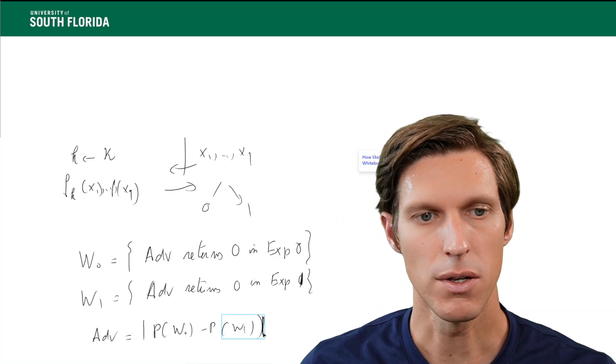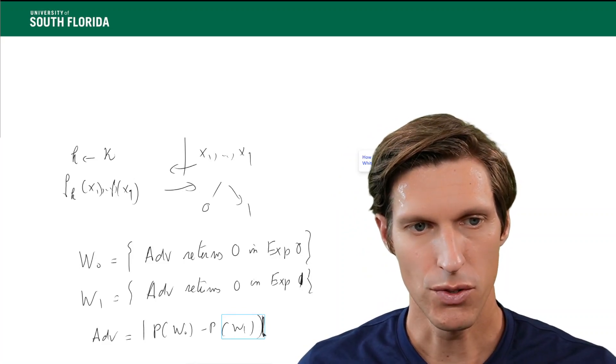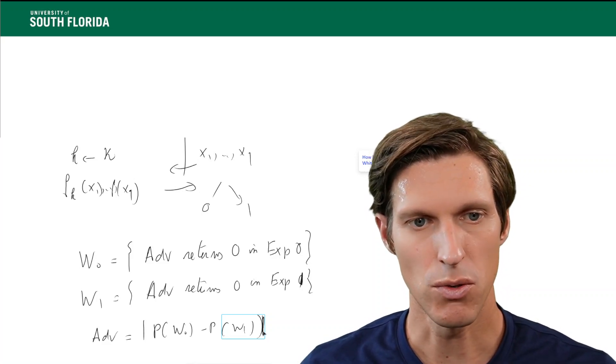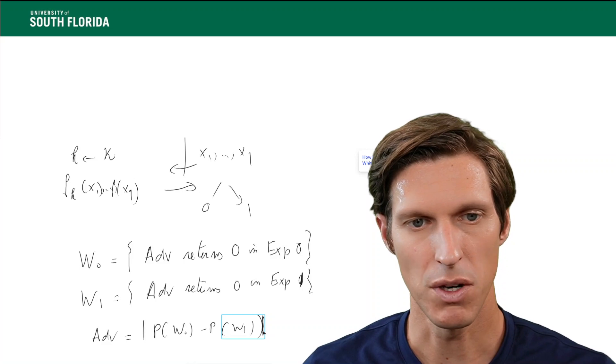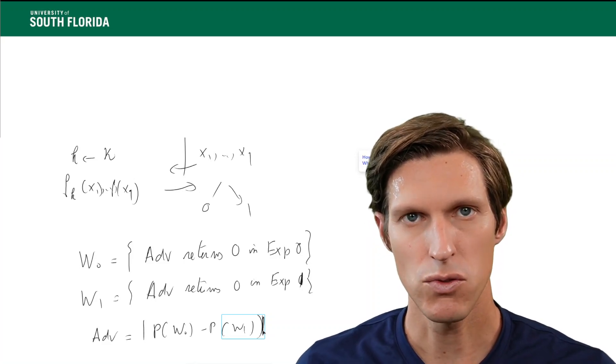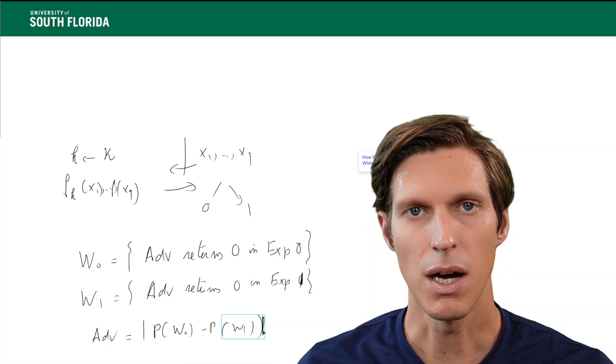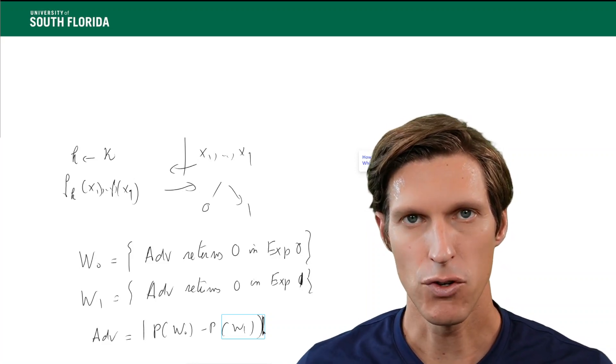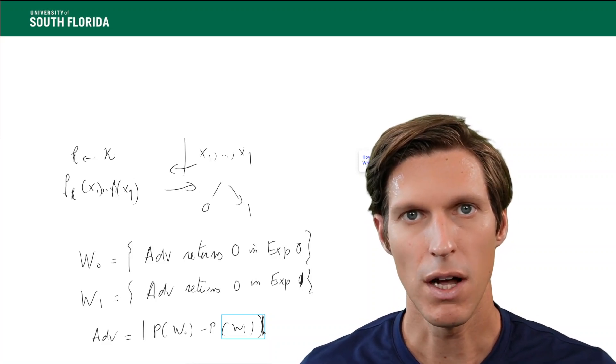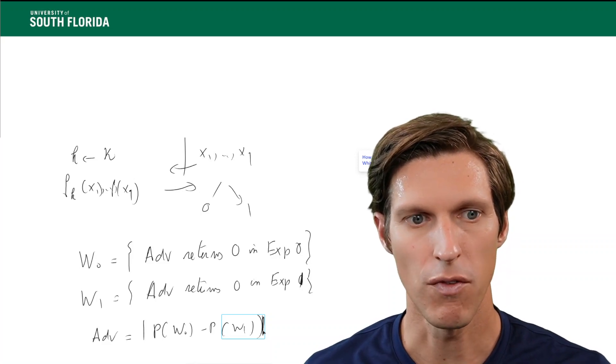So it really doesn't matter if, for example, the adversary returns very rarely 0 in experiment 0, or very often 0 in experiment 0. What matters is really the difference between those two values, because this discrepancy really measures that the adversary behaves very differently when presented with evaluations of a truly random function versus evaluations of a pseudorandom function.